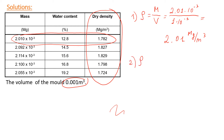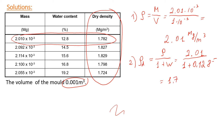The second step is to get the dry density. Dry density equals bulk density divided by (1 plus water content). For the first test, the bulk density is 2.01 divided by 1 plus 0.128 — using the ratio for water content — which gives us approximately 1.782 megagrams per cubic meter. We repeat this procedure to get the dry density for each of the tests.